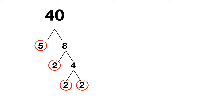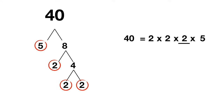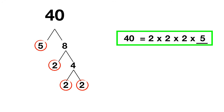So we write that 40 is equal to 2 times 2 times 2 times 5. And you can check: 2 times 2 is 4, 4 times 2 is 8, and 8 times 5 is 40. So this is the correct prime factors of 40.